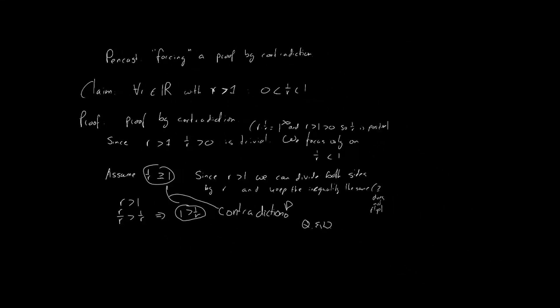But this video is about forcing a proof by contradiction, a mistake in proofs by contradiction. So, what went wrong here? Isn't everything we did fine?